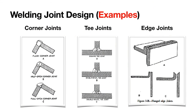Here are some examples for corner joints, T-joints, and edge joints. For edge joints, these joints are mainly used to join edges of sheet metals and are used to reinforce flanges of I-beams and mufflers. So this was all about welding joint design, joint types, and edge preparation. Next, we are going to move to welding positions.